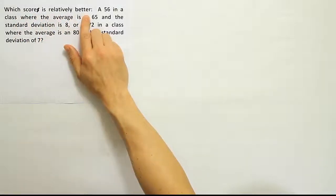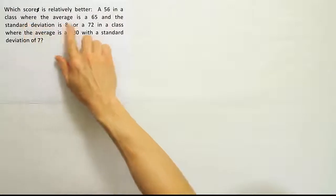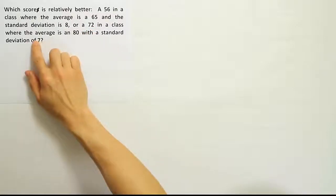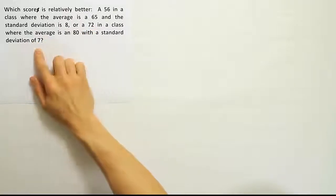Which score is relatively better? A 56 in a class where the average is 65 and the standard deviation is 8, or a 72 in a class where the average is 80 with a standard deviation of 7?